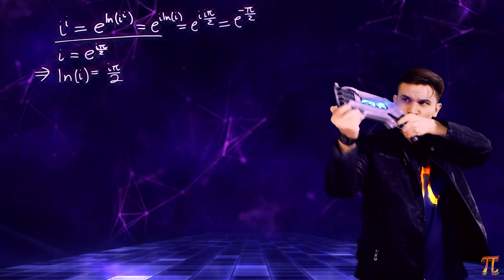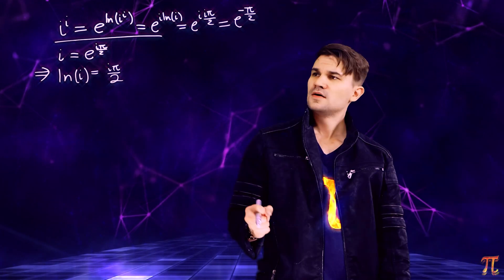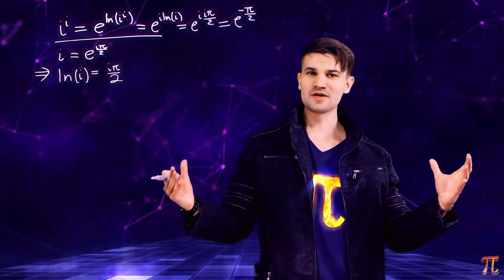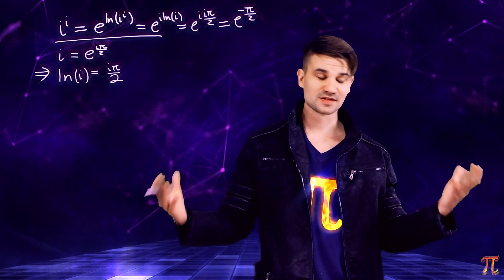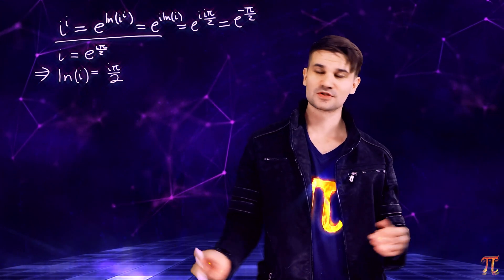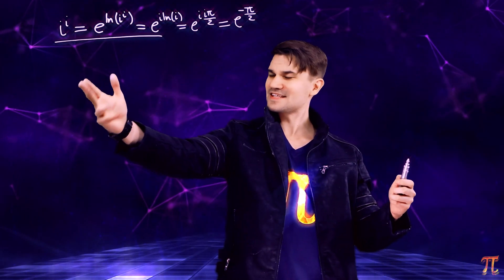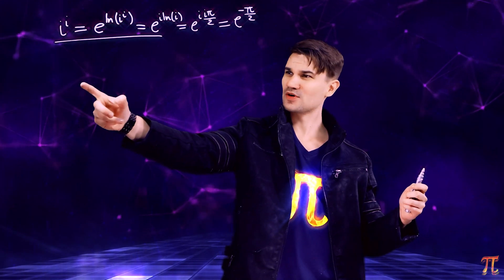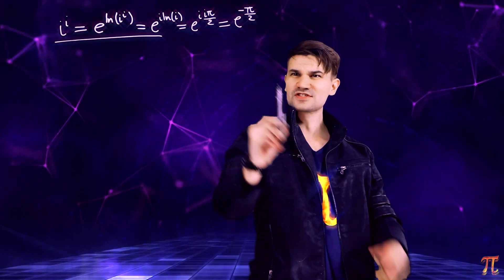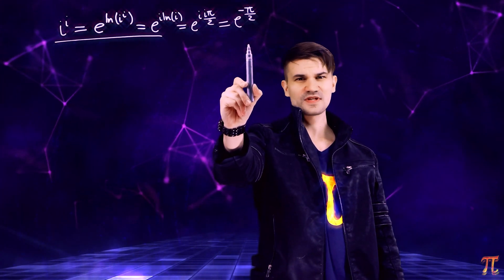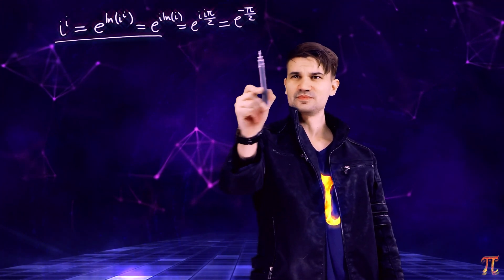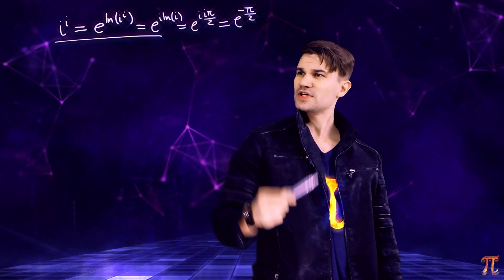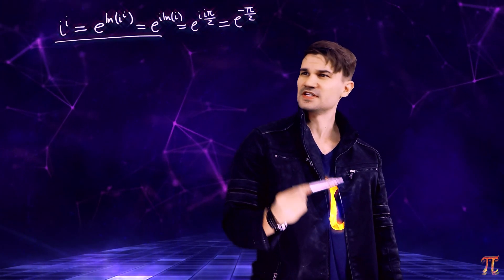This thing is real? All right, now it's not uncommon for people to talk about this, at least among our circle. i to the i — that's the imaginary unit raised to the power of i, and it gives us a real number. So that's kind of interesting, and people have pointed this out quite frequently. That's pretty interesting there.